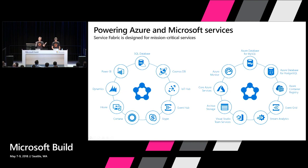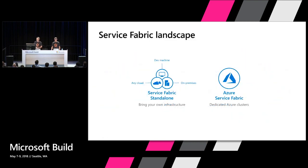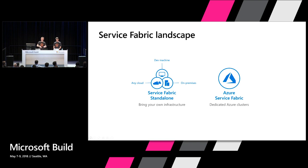When you look at the landscape of Service Fabric, there are two products today. There's the on-premise product called Service Fabric Standalone — you install it on a set of machines, network them together, run one PowerShell command, and in under a minute you've got a networked cluster. And then there's Service Fabric running inside Azure, where you get a managed cluster — we take care of upgrading the runtime so you don't have to worry about hardware management.